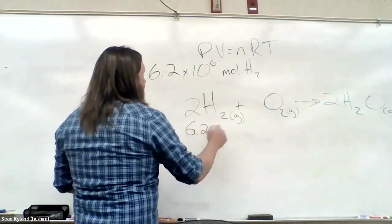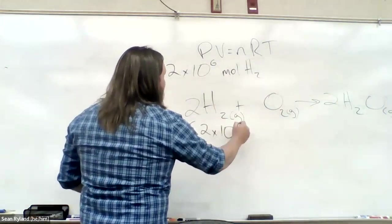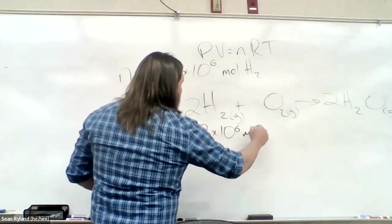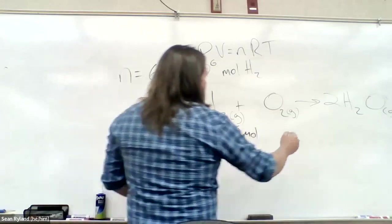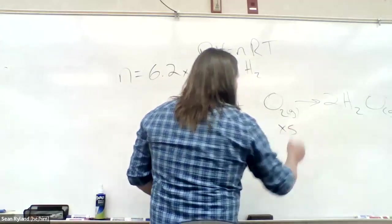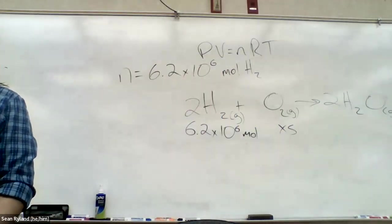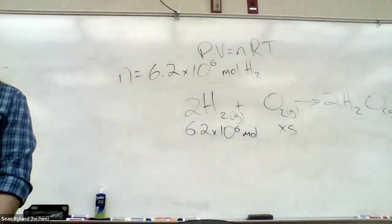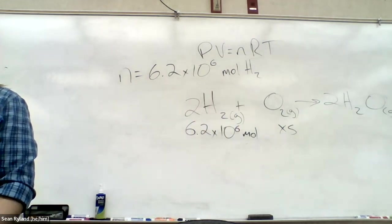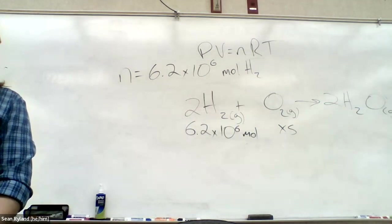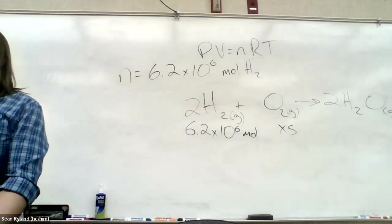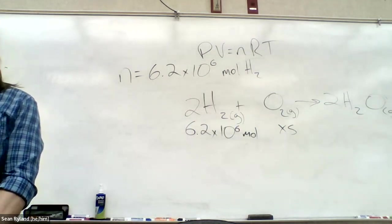So now we know how many moles of hydrogen we have. It's a safe assumption that hydrogen is going to be our limiting reactant here. Right? It would be otherwise a much bigger issue than just 30 people losing their lives if oxygen was not in excess.